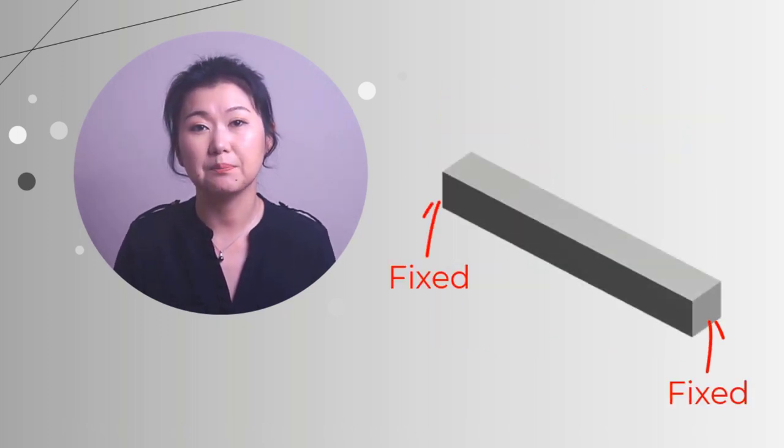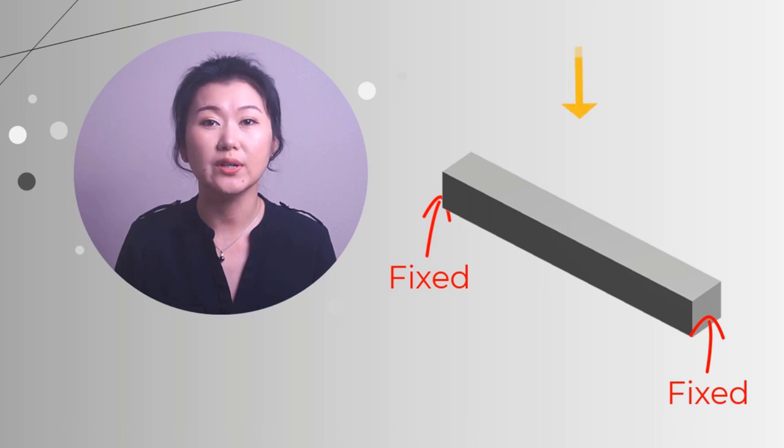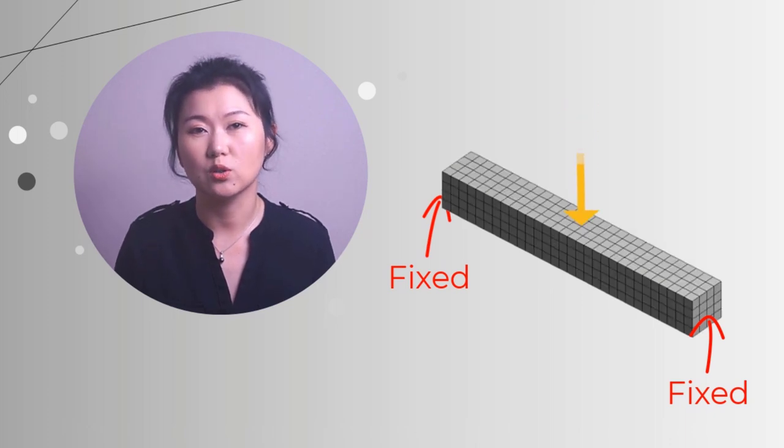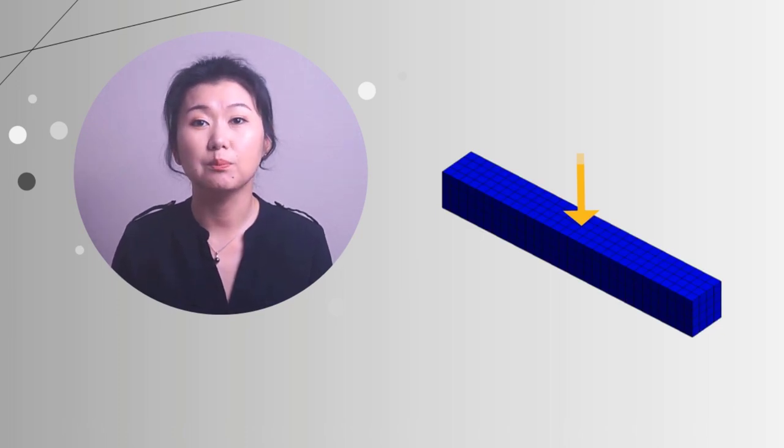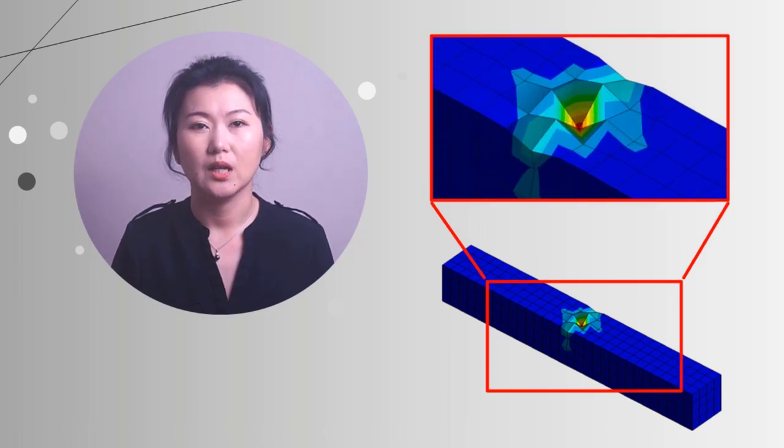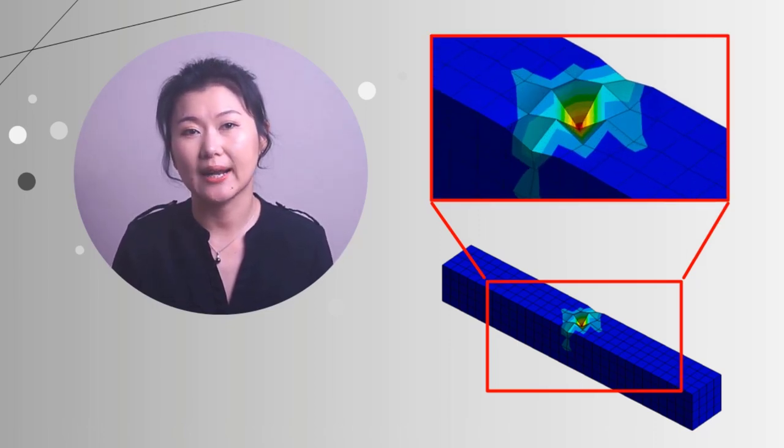Let us investigate a simple example of a beam fixed at both ends and subjected to a point load for a duration of 0.01 second. Looking at the total deformation plot, we can see that near the point load area, the elements are in hourglass mode. Note that the deformation plot here is scaled to visualize the hourglass problem.